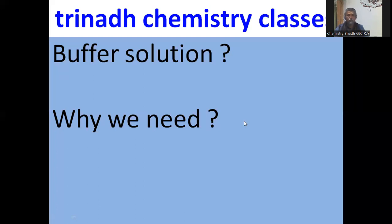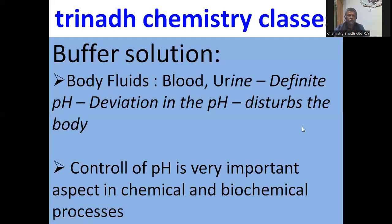We need to know why we need buffer solutions. In body fluids such as blood or urine, they have to maintain only a definite pH. If any deviation occurs in the pH, it disturbs or malfunctions the body. Control of pH is a very important aspect in chemical as well as biochemical processes. Even in agriculture, for fertility, pH must be maintained at a particular definite value. So maintaining pH at a definite point is very important.